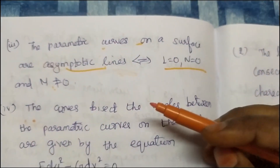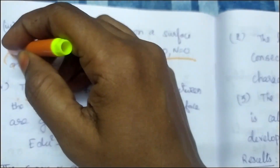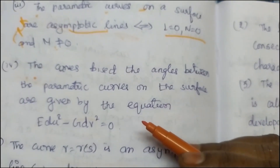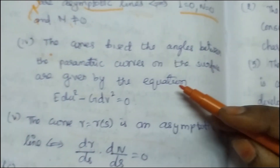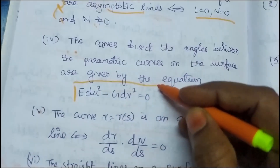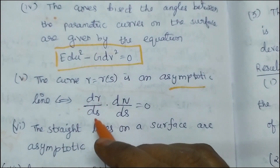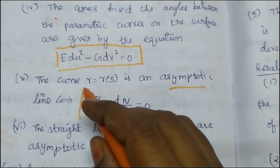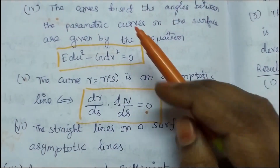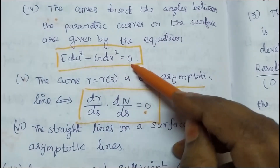Parametric curves on the surface are asymptotic lines — condition: l equal to 0, n equal to 0, and m not equal to 0. The curves bisect the angles between the parametric curves on the surface, given by the equation e du squared minus g dv squared equal to 0. A curve is asymptotic if and only if dr by ds dot dn by ds equal to 0. The curves bisect the angle between the parametric curves on the surface, given by the equation e du squared minus g dv squared equal to 0.